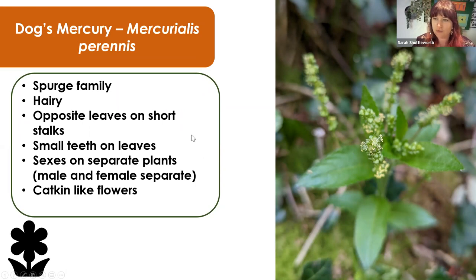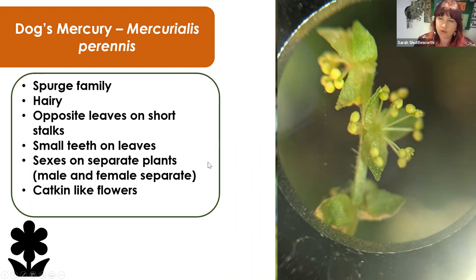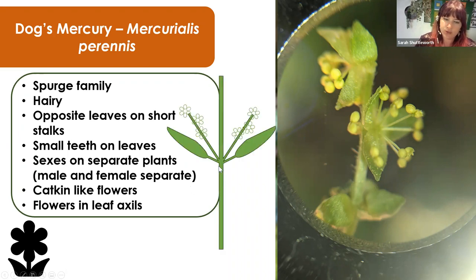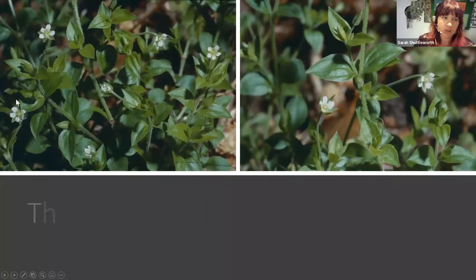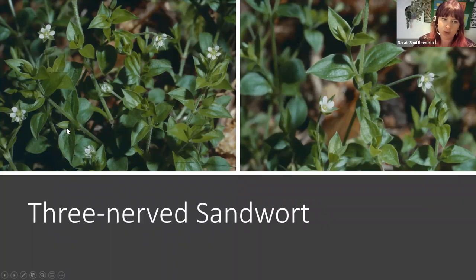The flowers are catkin-like and quite nondescript — rather than having separate petals and sepals, they have a combination called tepals, very small and not very obvious. The flowers are borne on long stalks in the leaf axils, so where the leaf comes out from the stem is where you get the flowers coming from. This is one of my probably favourite ones when teaching woodland botany because it looks very similar to chickweed — but there's one really easy way to tell them apart.